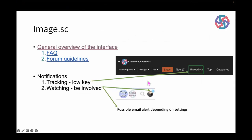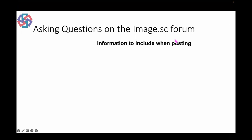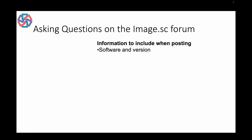How should we properly ask questions on the forum? Information to include when posting — think of it as encouraging someone to respond to your post in a timely manner, because no one wants to dig the information out of you that they need to answer your question. First: software and version. Include this in your tag — if you tag your post QPath we know it's QPath, but sometimes people just post 'segmentation' and we don't know it's in QPath. The version is very important, as things have changed just for the 0.5.0 release candidate.